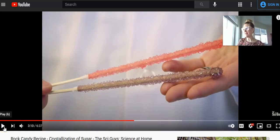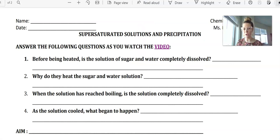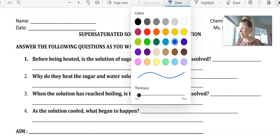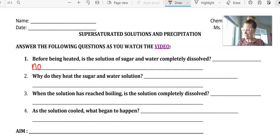All right, so making rock candy is super easy. You should definitely try it at home if you're interested. As long as you have enough sugar, it does take quite a bit of sugar, but I recommend it if you are interested. So let's go ahead and take a look at our notes. So before being heated, was the sugar solution of sugar and water fully dissolved? So we had one cup of water, three cups of sugar, and no, it was not completely dissolved.